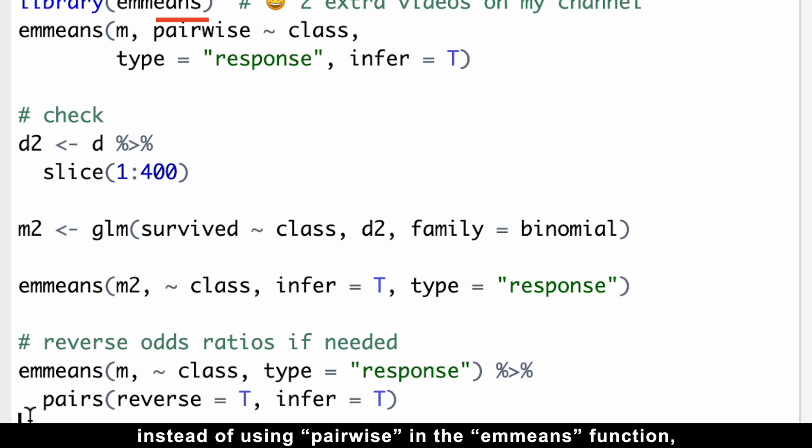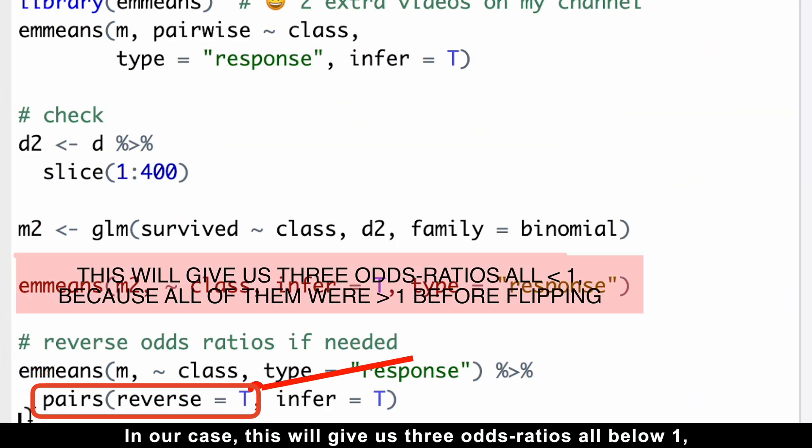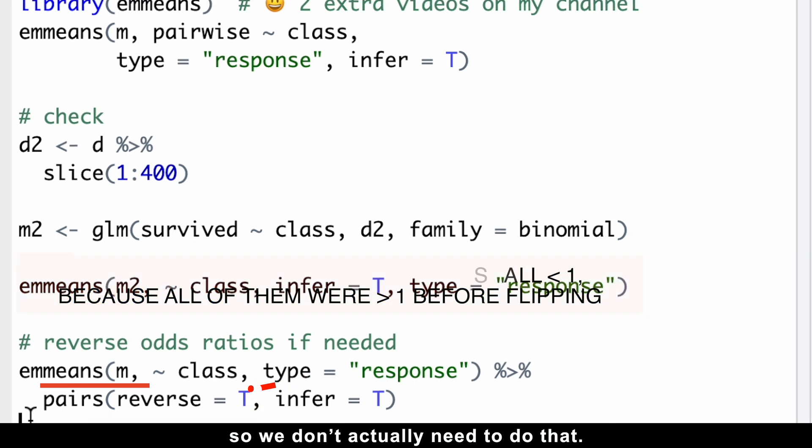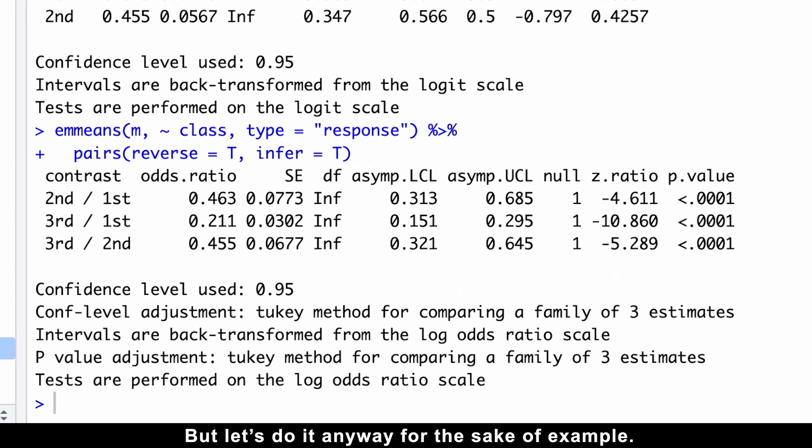Instead of using pairwise in the emmeans function, we can use pairs reverse equals true to flip the odds ratios. In our case, this will give us 3 odds ratios all below 1, because all of them were above 1 before flipping. So we don't actually need to do that, but let's do it anyway for the sake of example.